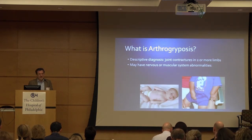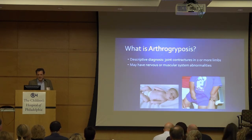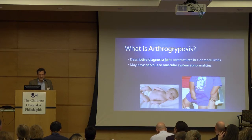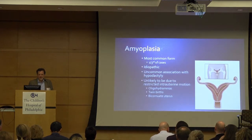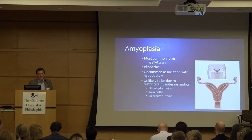What is arthrogryposis? It's really just a descriptive diagnosis. It just means that you have joint contractures in two or more limbs, and that definition is probably in debate as well. They may have nervous or muscular system abnormalities. There's amyoplasia, which is the most common form — about a third of cases are amyoplasia. Idiopathic, uncommon association with hypodactyly or symbrachydactyly, depending on how you look at it.